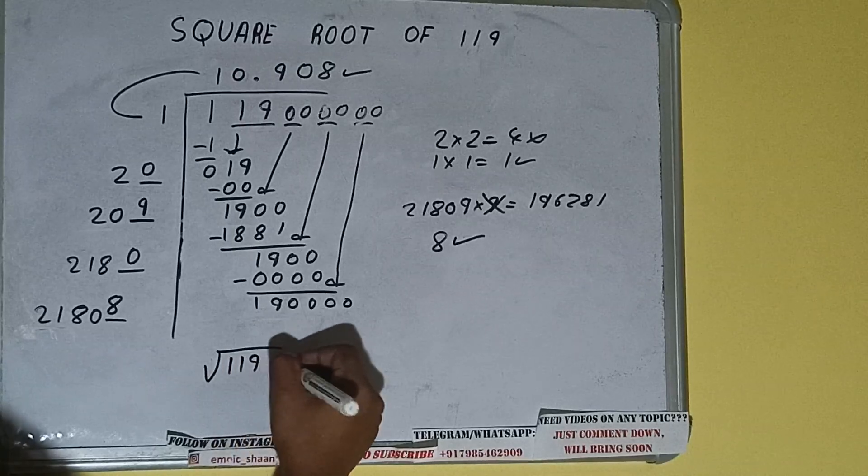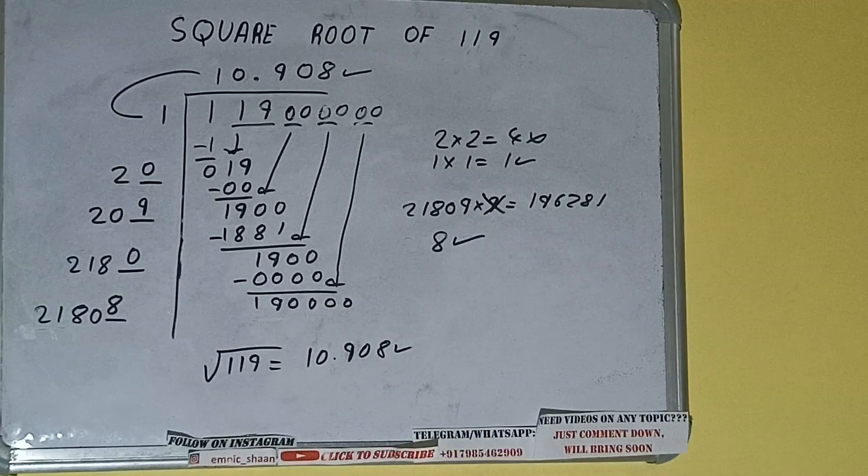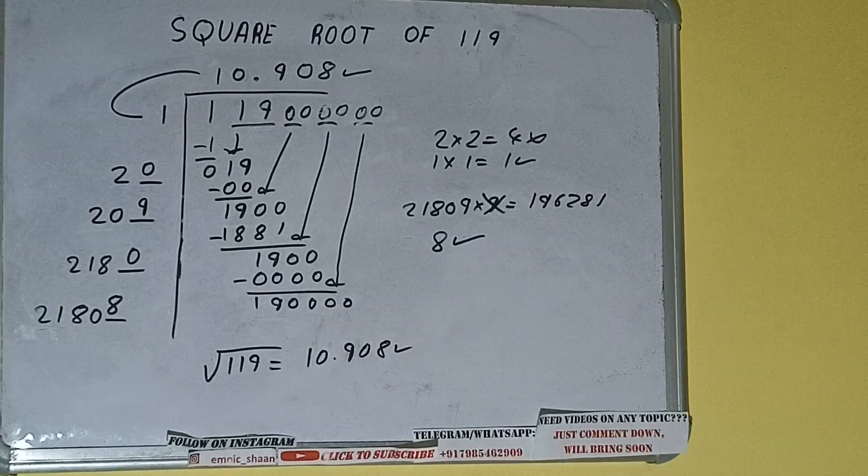But we don't need to calculate because we got the answer correct up to 3 decimal places. So square root of 119 will be 10.908. That will be the answer. So this is all about square root of 119.